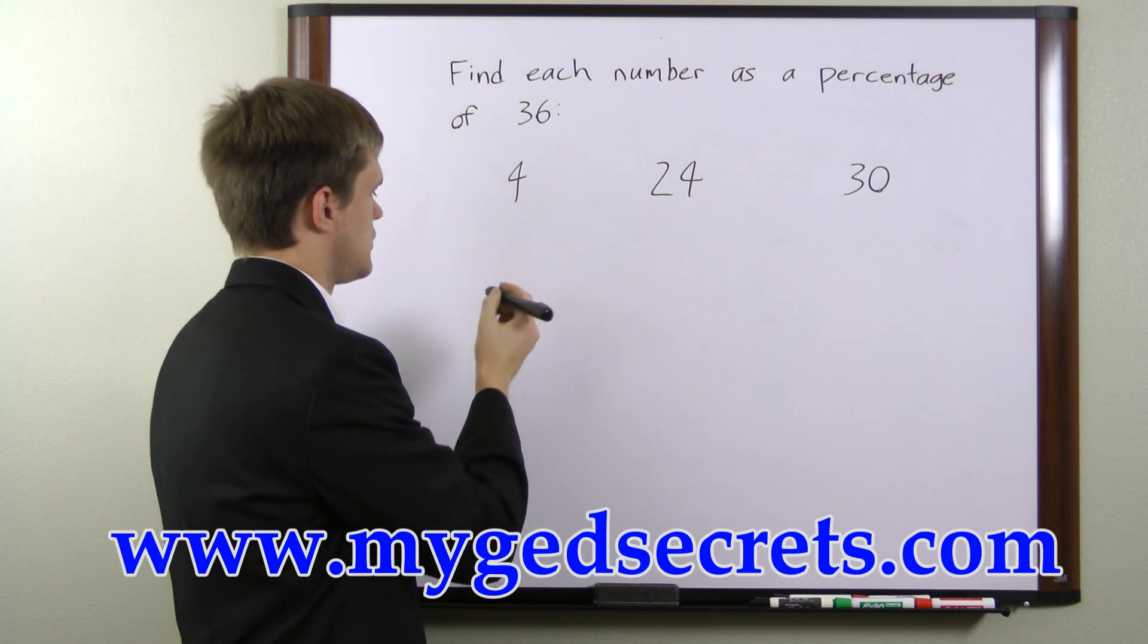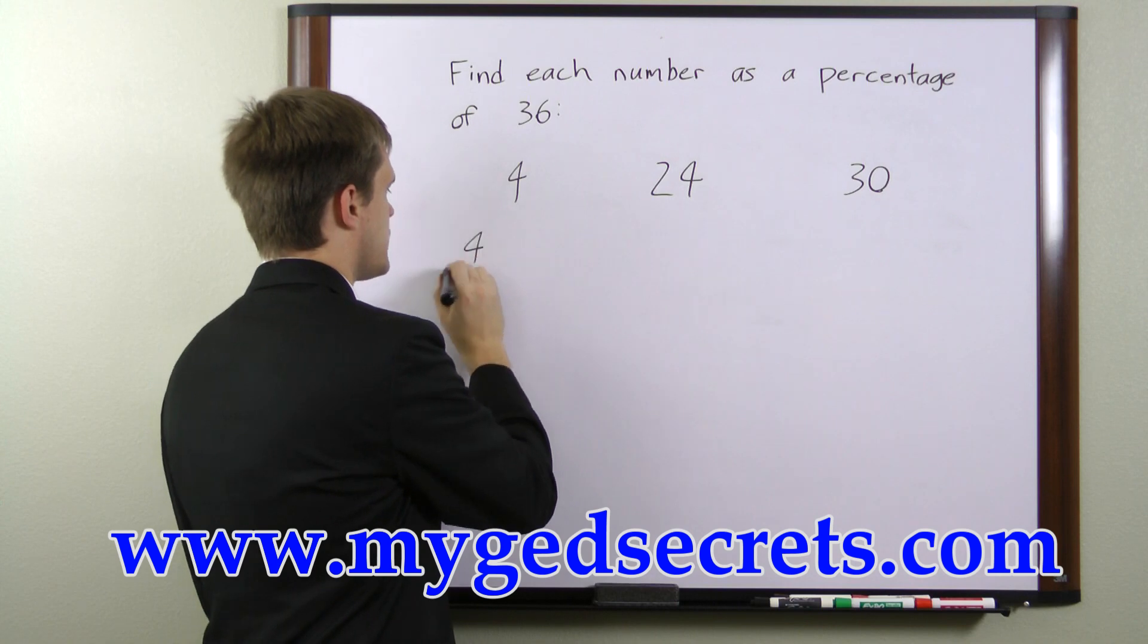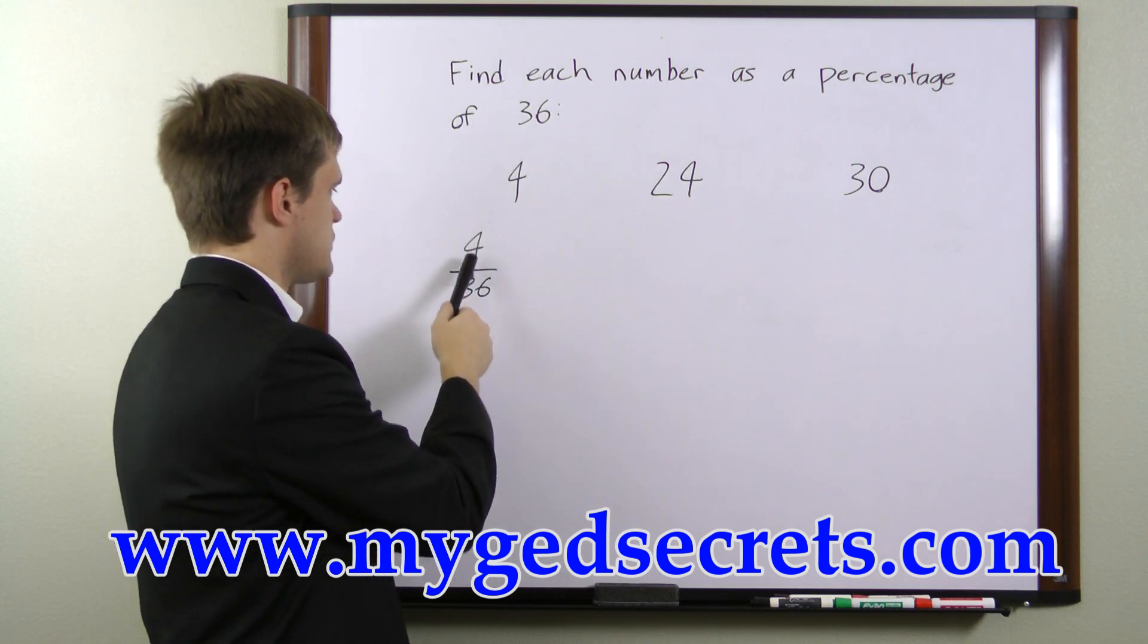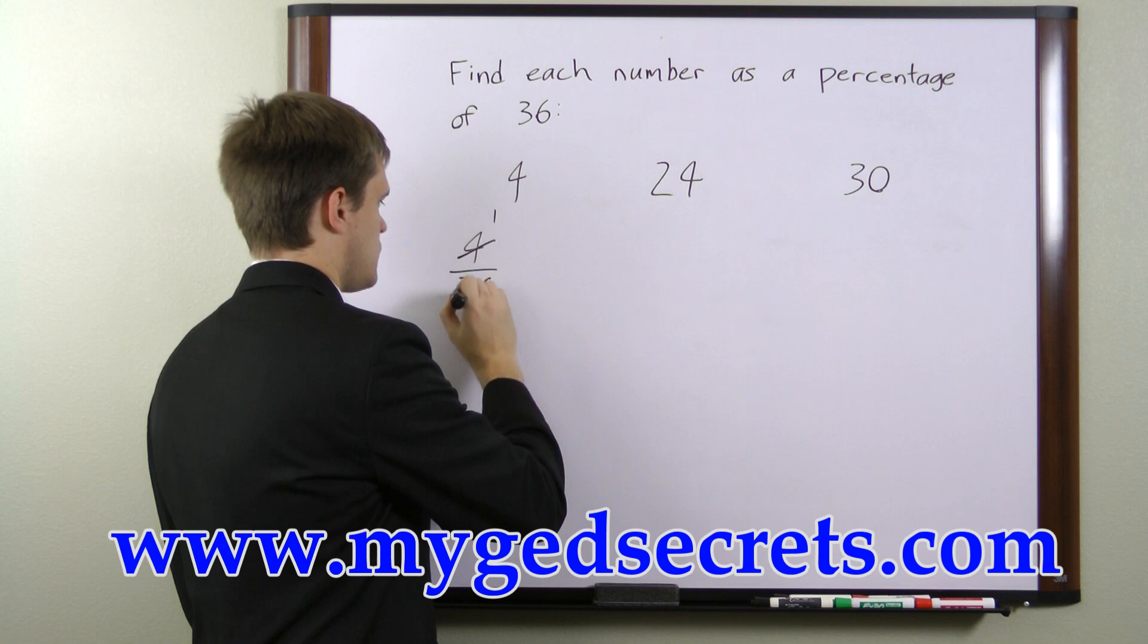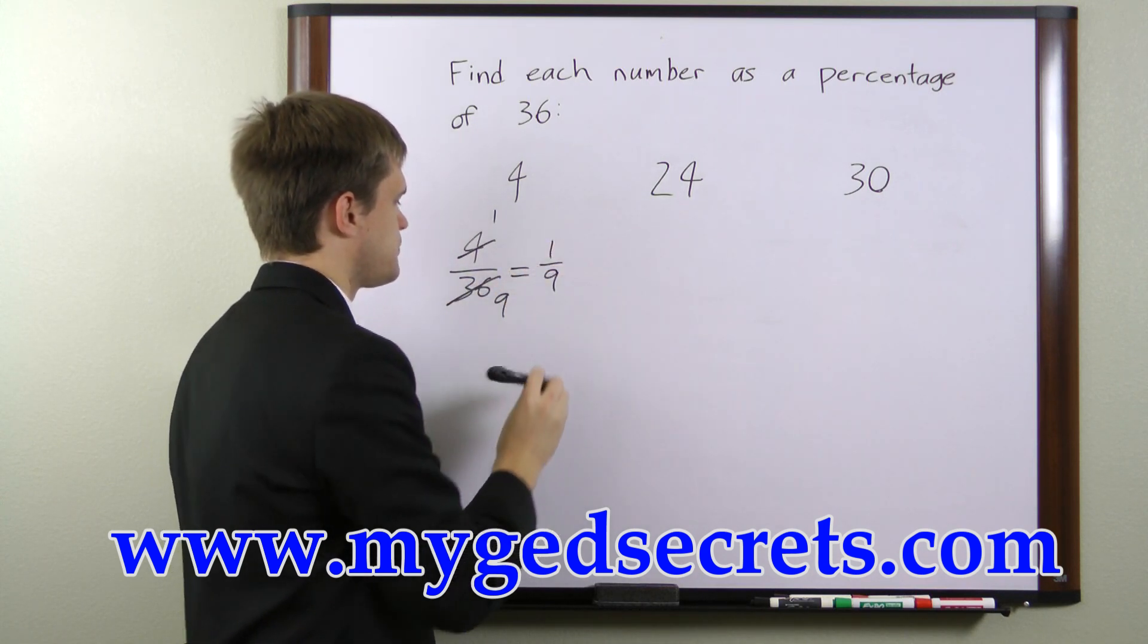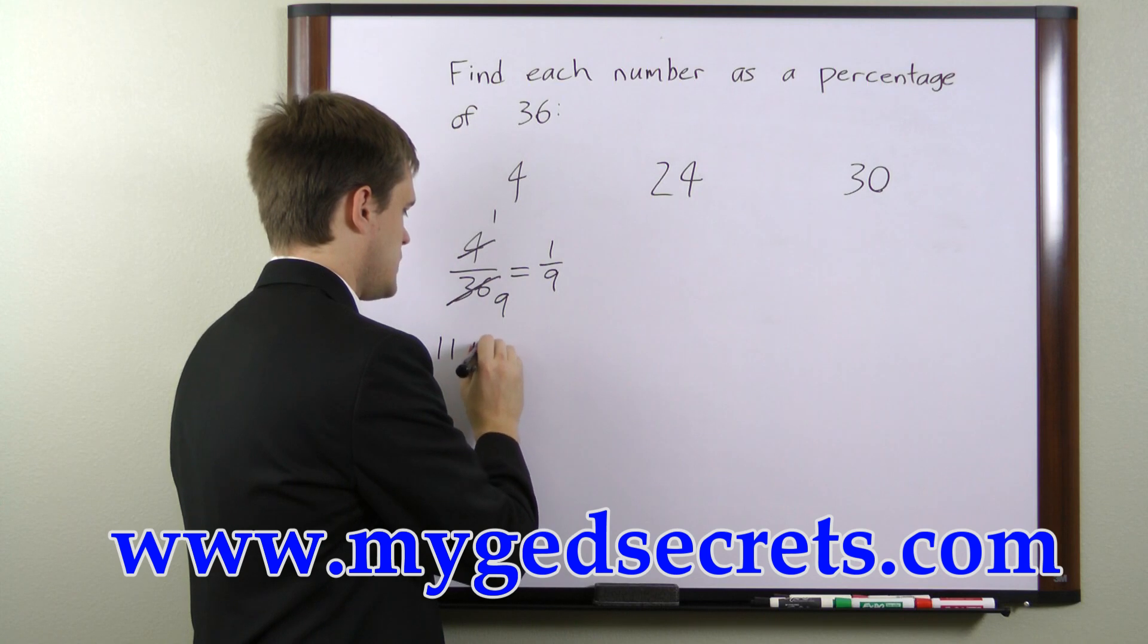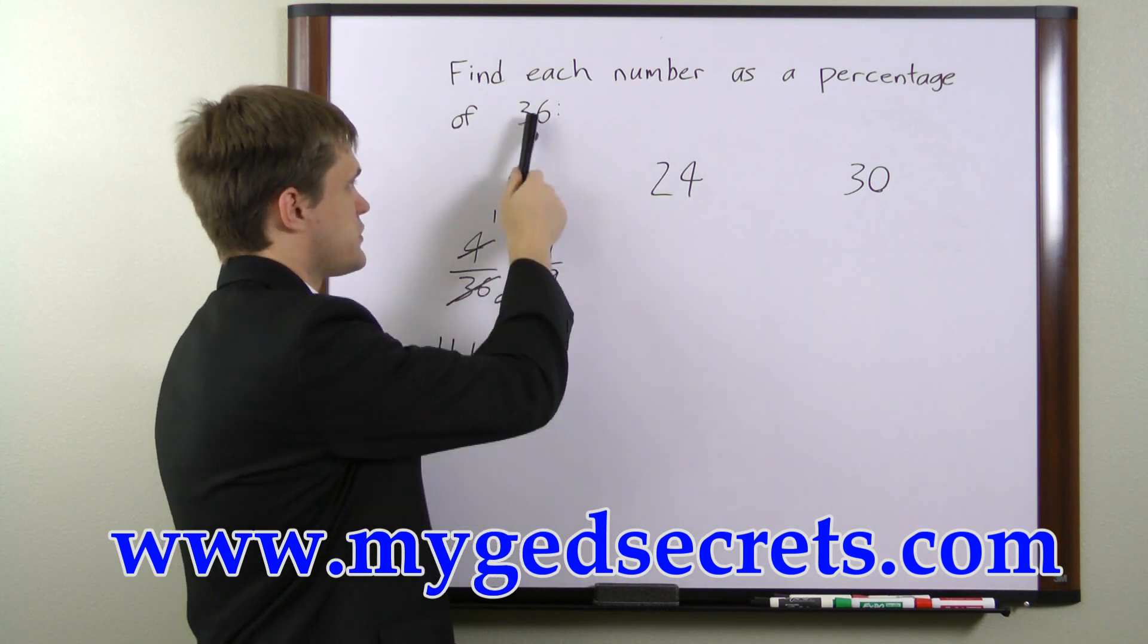We have 4, so to find the percentage of 36 that 4 is, we'll divide 4 by 36. Now, we can treat this as a fraction and reduce it by dividing top and bottom by 4, so this becomes a 1 and this becomes a 9. So we have 1 over 9. The percentage equivalent of 1 over 9 is 11.1 percent. So 4 is 11.1 percent of 36.